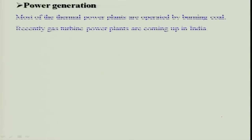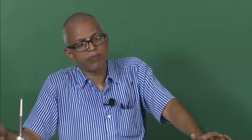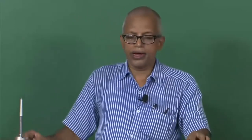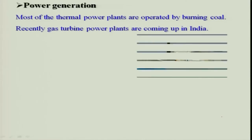Combustion is very important for transportation systems. For power generation, most thermal power plants are operated by burning coal. Today, around 60 to 70 percent of power is generated by burning coal. The rest is done by nuclear, non-conventional energy, diesel power, and other things. Gas turbine power plants are also there in India.